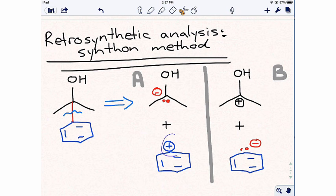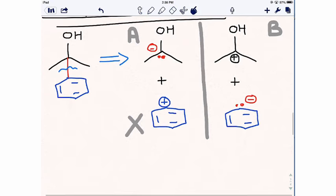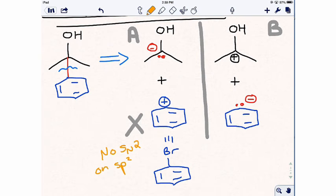We can discount or eliminate option A, because we don't have any reaction right now that allows us to put a leaving group onto the aromatic ring and do any type of SN2 reaction. You will learn reactions that will do this in later courses. Also, we haven't seen any reagents that put a metal directly on a carbon next to another electronegative atom. Remember that SN2 on SP2 hybridized carbons is not possible.